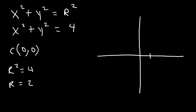So relative to the origin, you need to travel 2 units to the right, 2 units to the left, 2 units up, and 2 units down. Then plot each of those points, and simply connect those points by means of a circle. So that's how you can graph a circle.